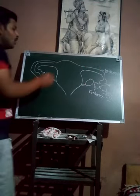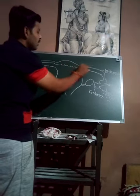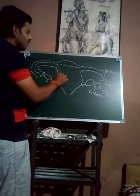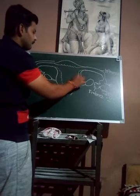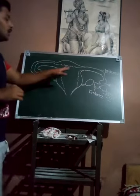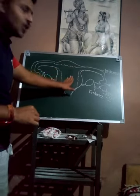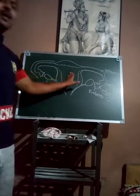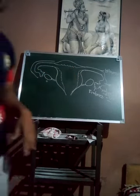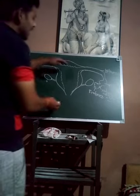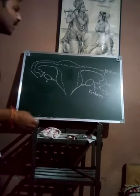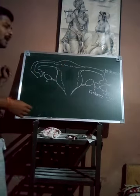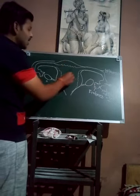The next part of the female reproductive system — another accessory duct — is this inverted pear-like structure, called the uterus, also known as the womb. It is called the womb because this is the part responsible for the development of the embryo. The shape of the uterus is like an inverted pear.